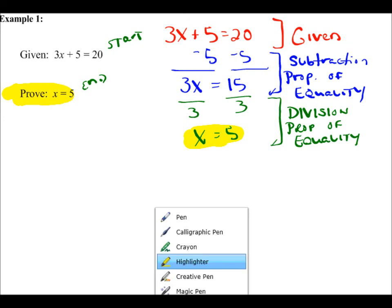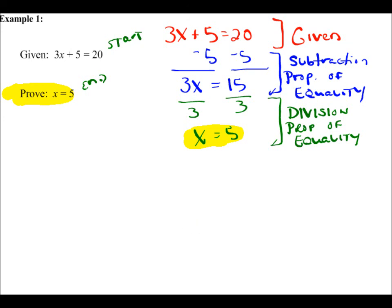When the final result matches what you wanted to prove, you're done. We show that by writing the letters Q, E, D — which stands for the Latin phrase 'quod erat demonstrandum,' meaning 'and so it has been demonstrated.' That's how we write a basic algebra proof: using equation-solving rules and naming the actual properties we apply.